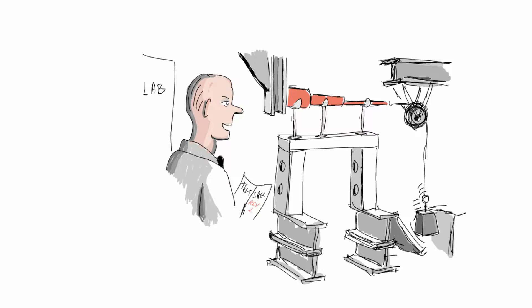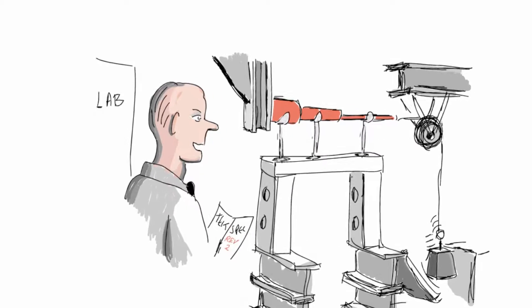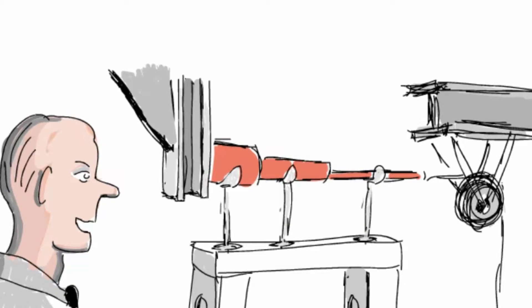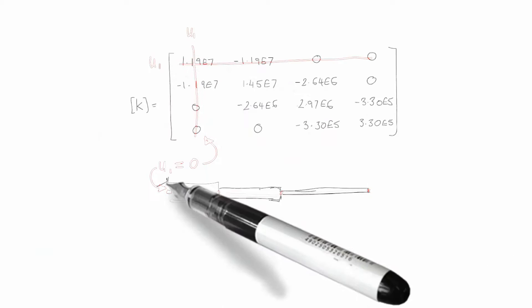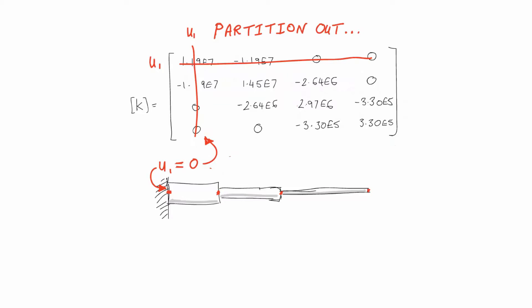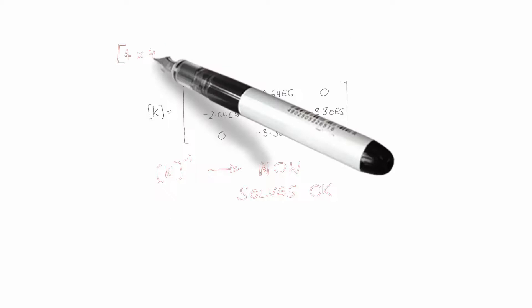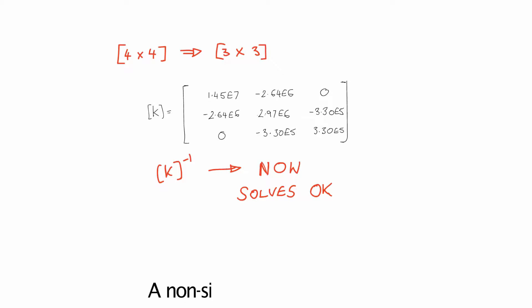Now we're in much better shape because the structure is properly constrained to ground. What we have to do is partition out the row and column associated with u1 from the matrix. u1 has been set to zero and now the condensed or constrained stiffness matrix is shown. Number of degrees of freedom have dropped from four down to three in our system and now it will solve okay.